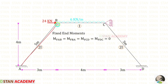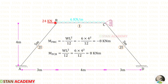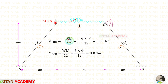In members AB and CD there is no load, so all the fixed end moments in these two members are zero. For member BC, with uniformly distributed load of 6 kN/m, the fixed end moment formulas are −WL²/12 and +WL²/12. With W = 6 and L = 4, we get M_BC = −8 and M_CB = +8.